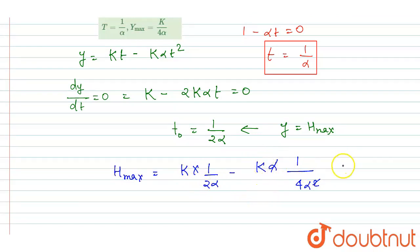minus 1/(4α), it will be 1/(4α). So finally you get the maximum height is k/(4α).